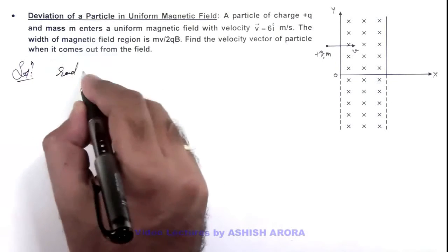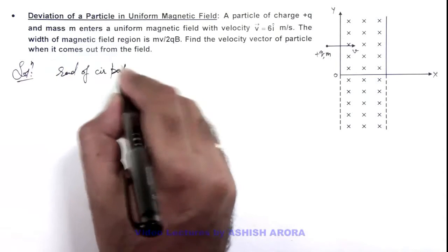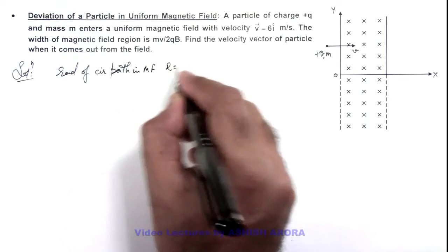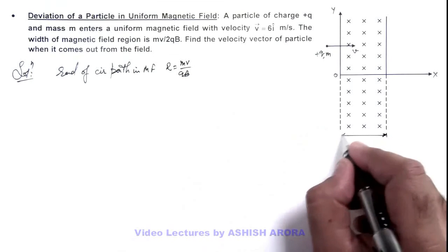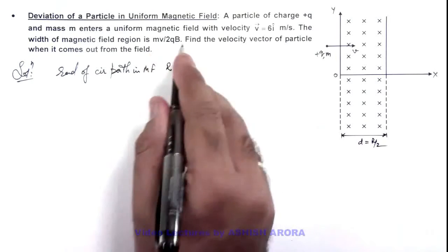Here in this situation we know the radius of circular path in magnetic field for any charge particle is mv/qB. And here the width of this sector of magnetic field d is given as r/2 because it is mv/2qB.